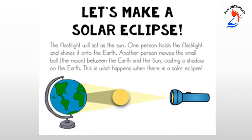Children, now it's activity time. To understand better how a solar eclipse occurs, I hope everybody will be having a torch, a tennis ball and a globe at your home. Suppose you are not having a globe, you can even use a football as the earth. The flashlight will act as the sun. So, if one person holds the flashlight and shines it onto the earth, the other person moves the small ball between the earth and the sun. Now, what will happen? It will cast a shadow on earth. So, this is what happens when there is a solar eclipse.